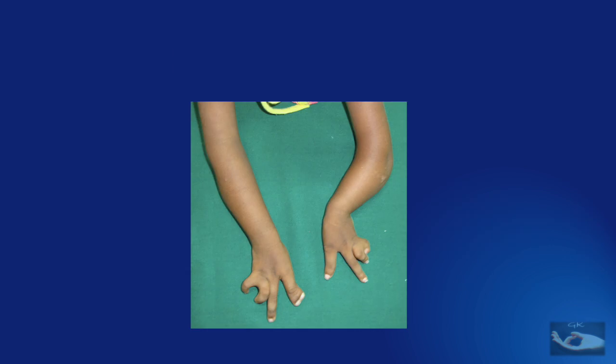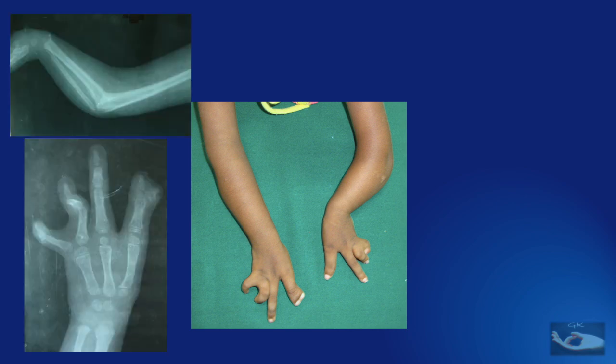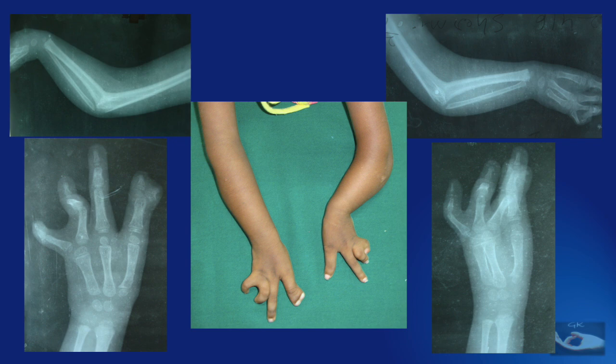In this child presenting with bilateral ulnar longitudinal deficiency, we can make out hypoplasia of the ulna, pre-axial and post-axial polydactyly on the right side and similar findings on the left side also. There is severe narrowing of the thumb web and the thumb is almost in the same plane as the fingers, but on both sides there is radiohumeral synostosis, making it bilateral Type 4 ulnar longitudinal deficiency.